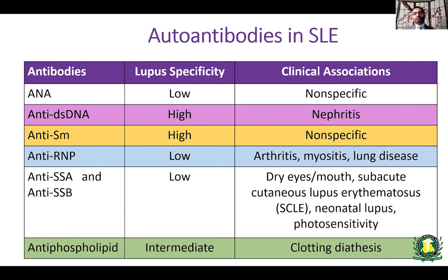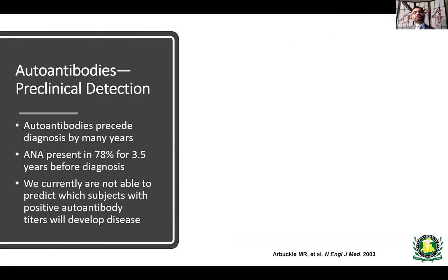Antiphospholipid antibodies are usually associated with increased chances of clotting, such as deep venous thrombosis, arterial thrombosis, and pulmonary embolism. An interesting fact about autoantibodies is that they can be present many years before the disease even begins. For example, ANA can be present in about 78% of patients for about three and a half years before diagnosis. However, we don't have any way to predict whether somebody with a positive antibody will develop disease later in life.